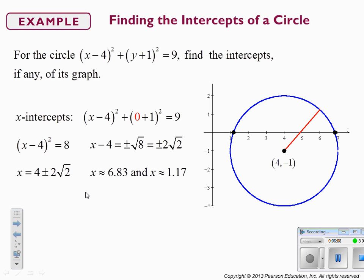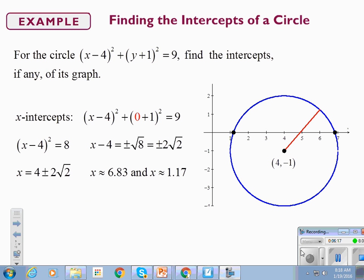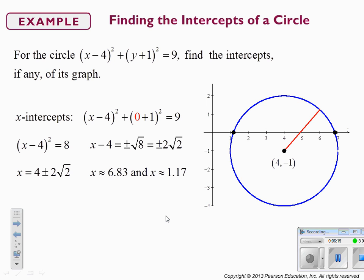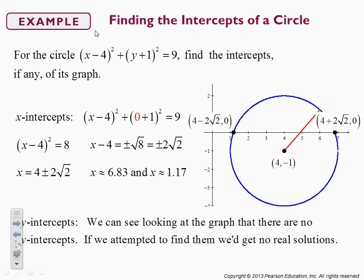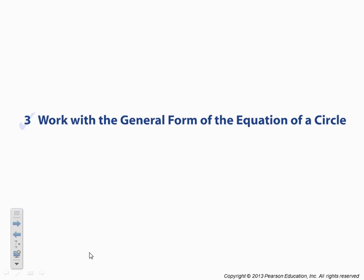Those x-intercepts are approximately equal to 6.83 and 1.17. For y-intercepts, we can see from the graph that there are none, but if there were we would plug in zero for the x value and solve for y. In this case, doing that gives no real solutions.